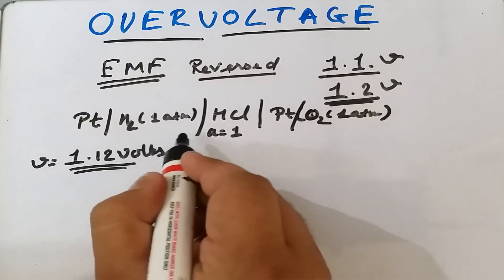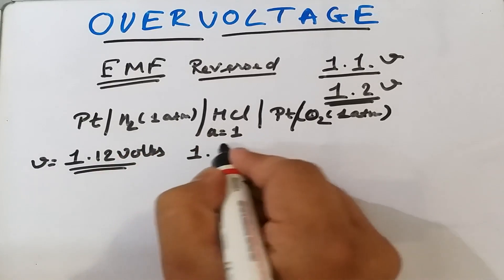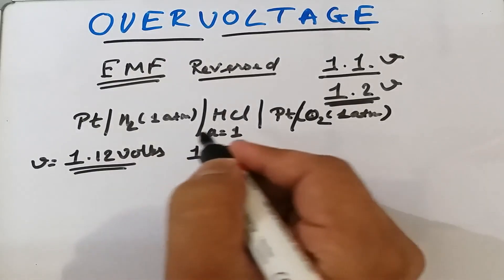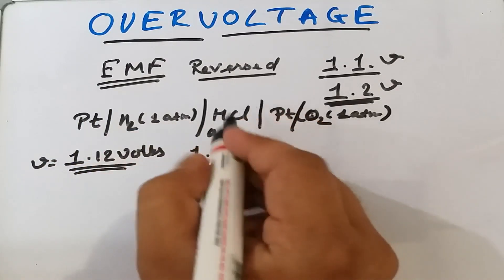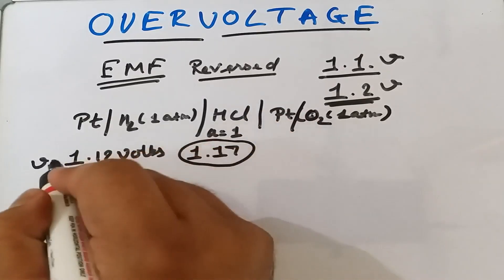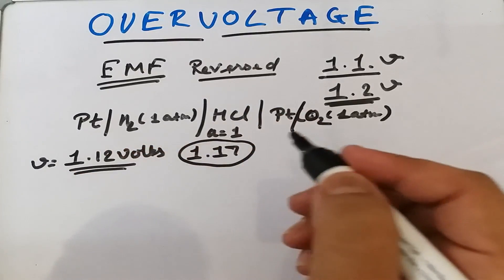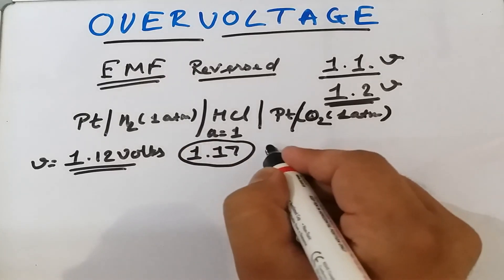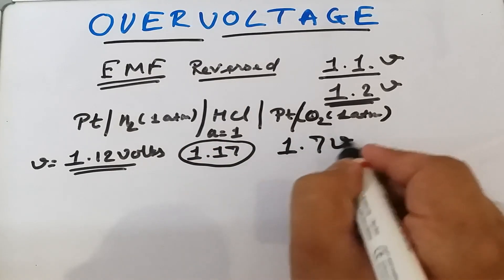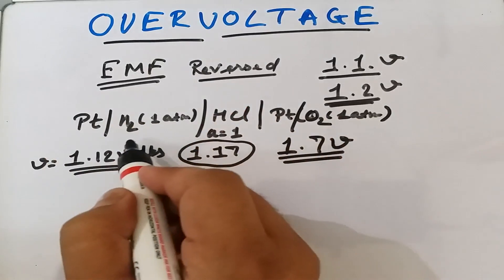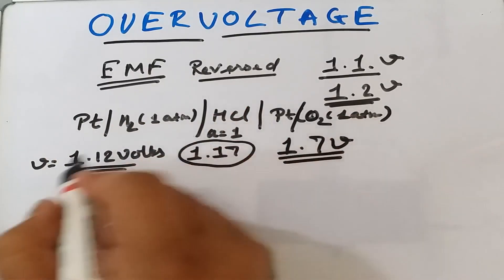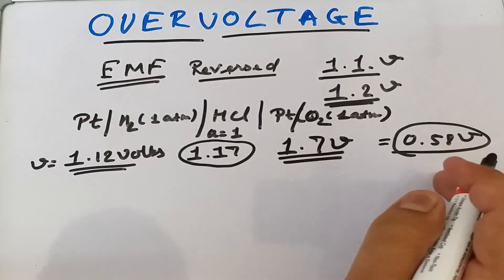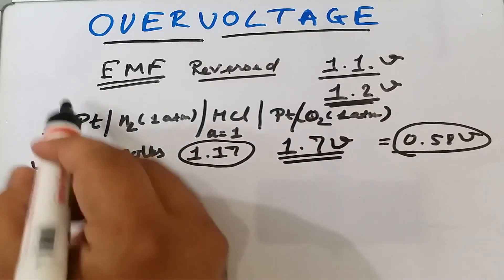In order to reverse the reactions of this cell, we might expect around 1.12 volts maximum. That means to start the evolution of hydrogen and oxygen, this much voltage should suffice. But it is generally observed that gas evolution does not start at that voltage; instead, a much higher opposing voltage is required — say, 1.7 volts in this case. The excess comes out to around 0.58 volts.